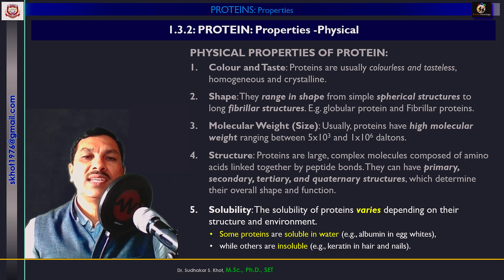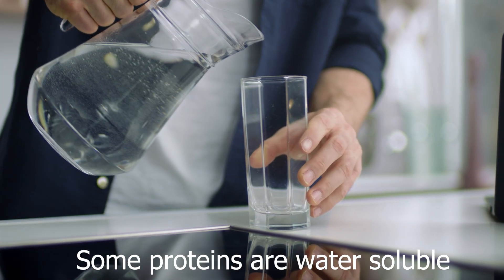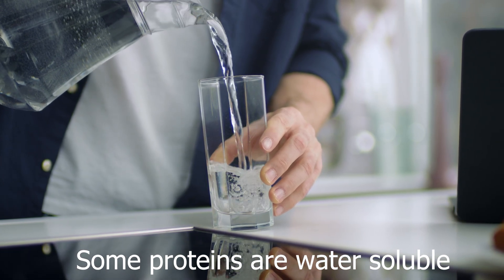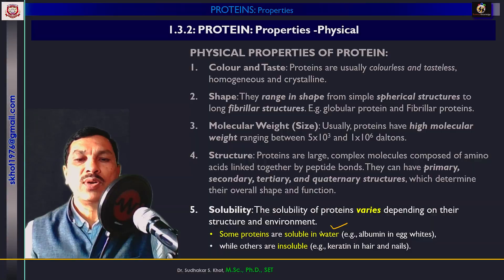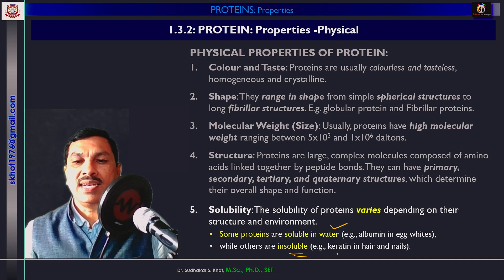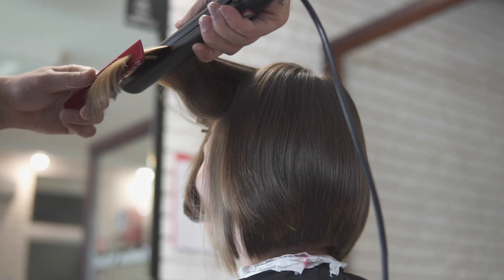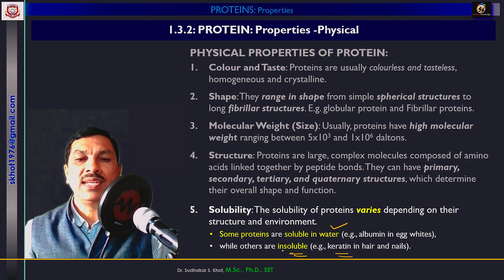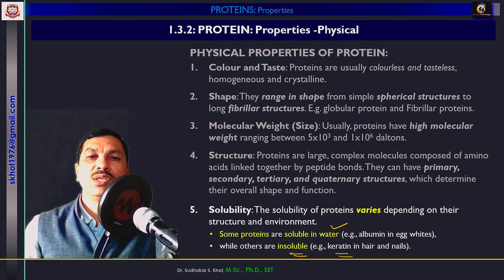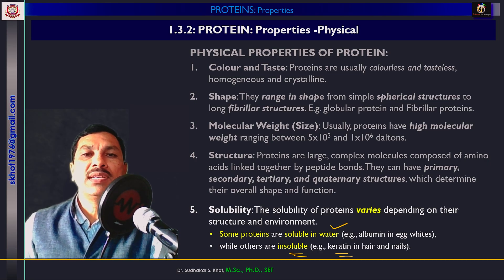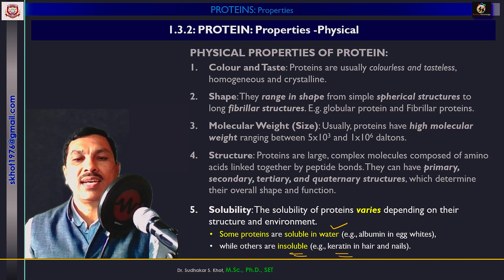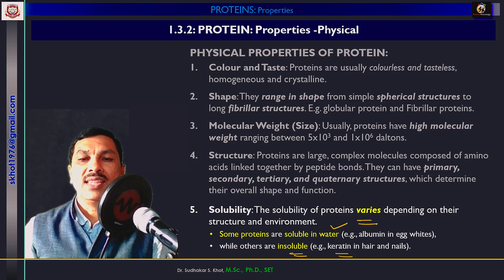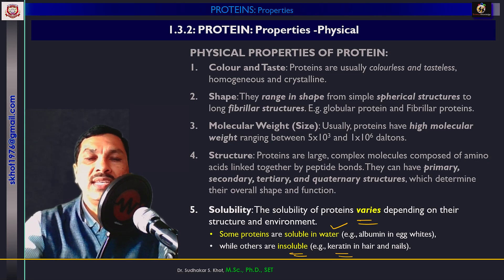Next property is solubility. Proteins show a variety of solubility. Some proteins are soluble in water — for example, egg albumin or blood serum. Whereas a number of proteins are insoluble in water — for example, keratin present in hair and nails is insoluble in water. The solubility varies from water to organic solvents, to alcohol, up to concentrated mineral acids and alkalis. So proteins show great variety in their solubility property.